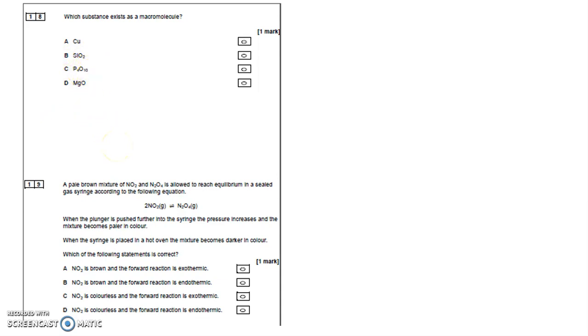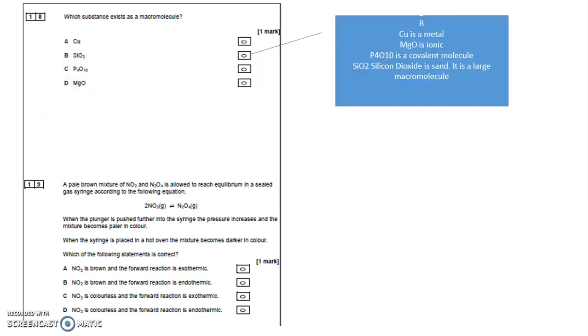A pale brown mixture of NO2 and N2O4 is allowed to reach equilibrium. When the plunger is pushed further into the syringe, the pressure increases and the mixture becomes paler in color. As I increase the pressure, by Le Chatelier's principle it will try and lower the pressure by lowering the volume.